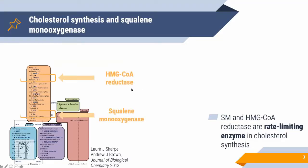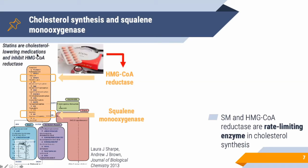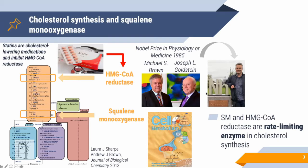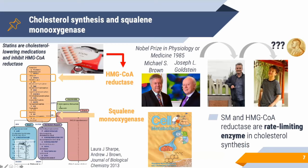Coming back to the pathway, I want to focus on two rate-limiting enzymes that control how much cholesterol is produced: HMG-CoA reductase and squalene monooxygenase. You may have heard of statins — they inhibit HMG-CoA reductase. Much of the regulation of this enzyme was discovered by Nobel laureates Brown and Goldstein. My PhD advisor later started his own lab and discovered the mechanisms underlying how squalene monooxygenase works as a rate-limiting enzyme.